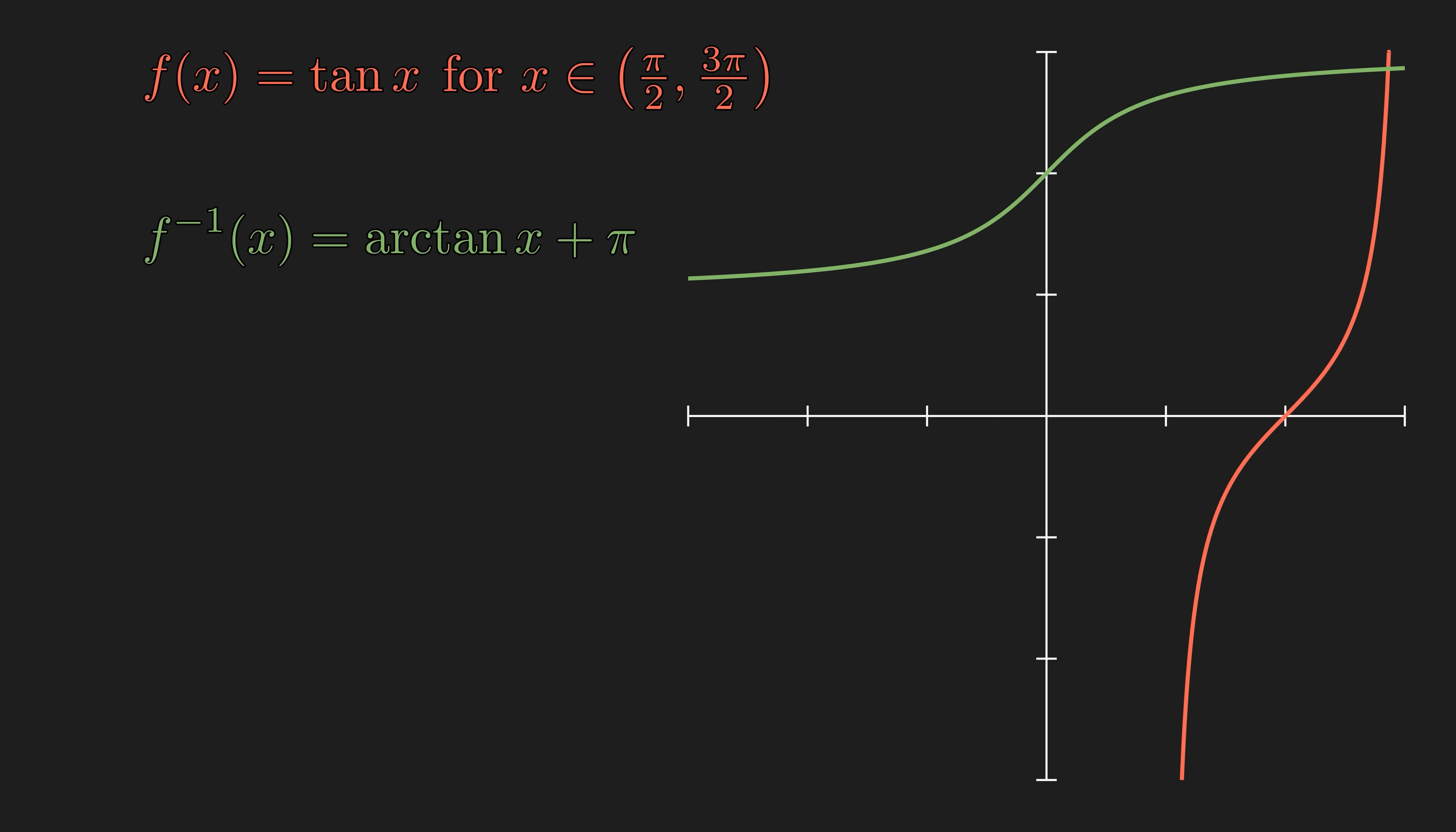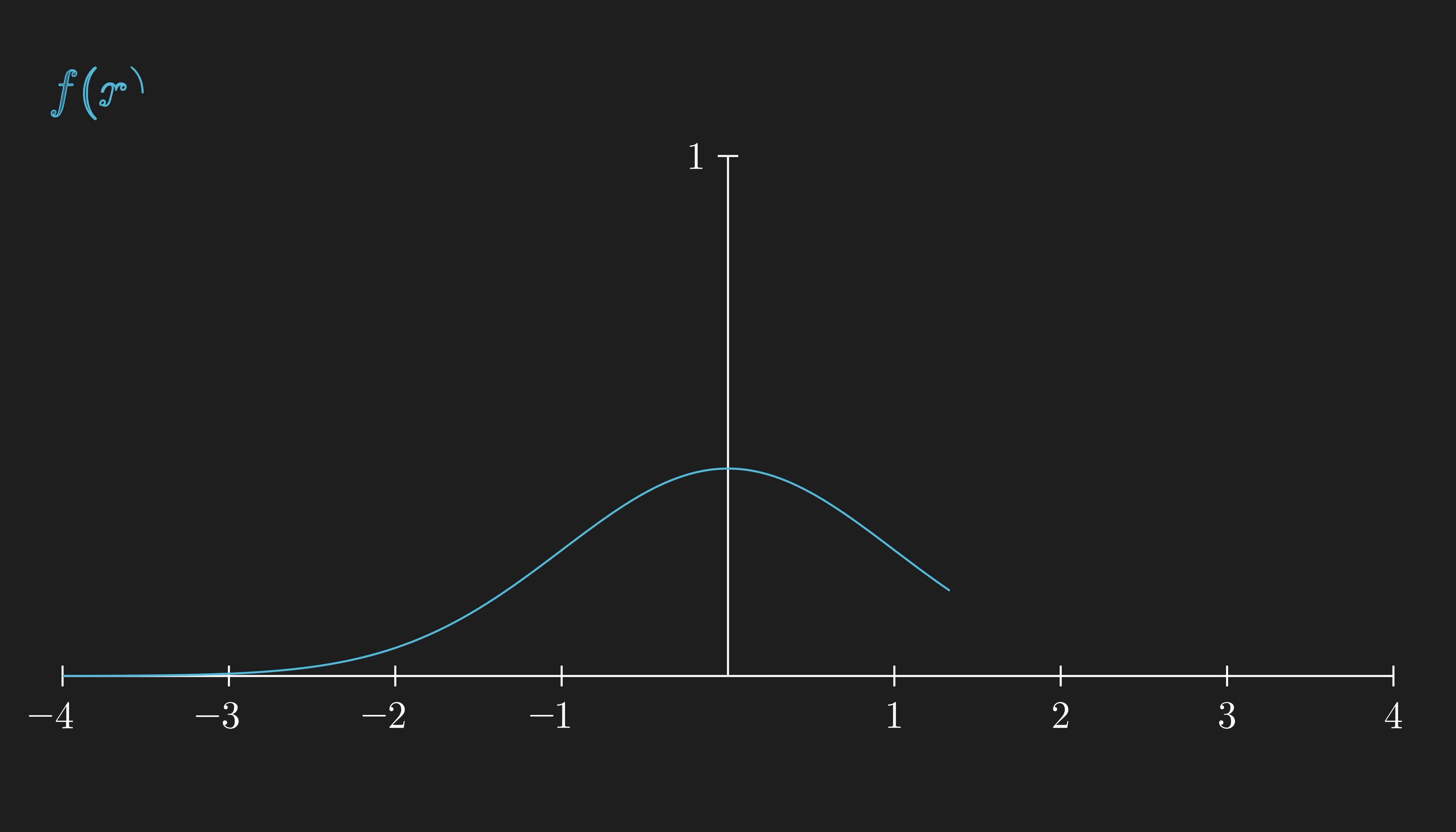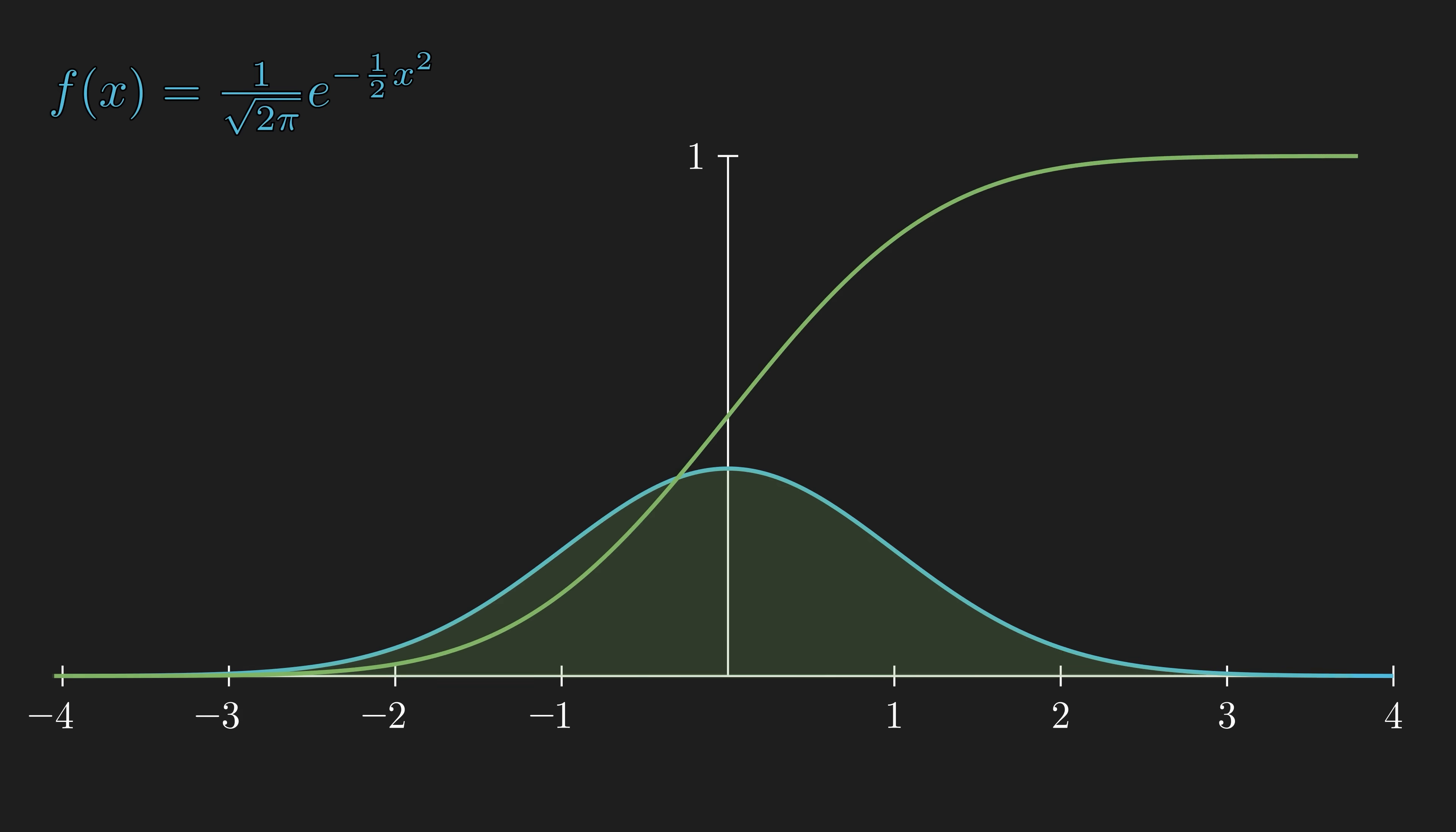So how do we actually find inverse functions? Let's first look at it from a computational perspective. This is the function that represents the standard normal distribution. And we frequently are interested in finding the area of the left tail under this curve.